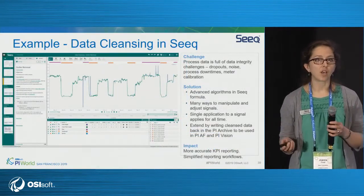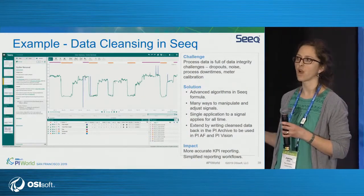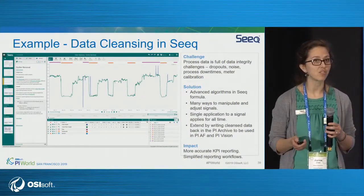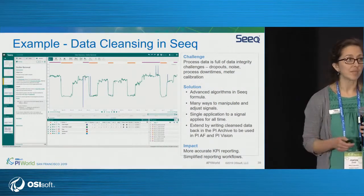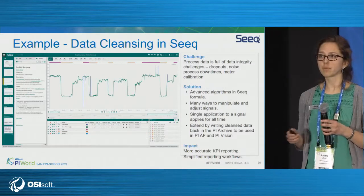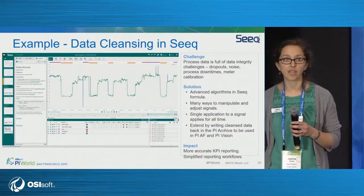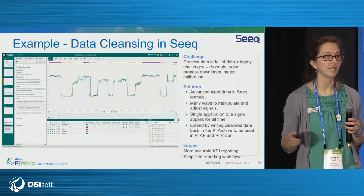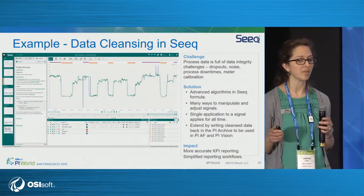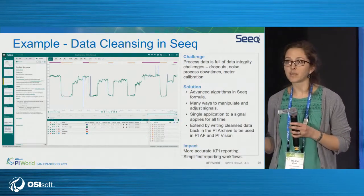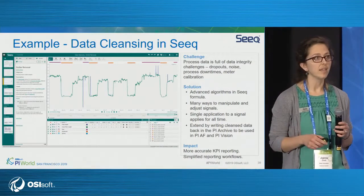One way SEEK is often used in this industry is in data cleansing. Data is wrought with difficulties. Sometimes the noise is interesting, sometimes it's not. There can be dropouts that need to be filtered out. Whenever your plant is down for any reason — planned maintenance — the flow meters do some wonky things. If you take an annual average, that's not really representative. You want to filter that kind of data out when you're summarizing your KPIs, and maybe there's instrument calibration you want to account for.